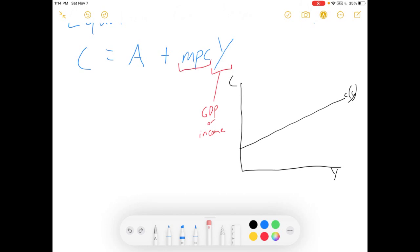Your MPC is the slope of your consumption function. It tells you, rise over run, rise of MPC divided by run of 1. It tells you how fast your consumption changes when you change income.